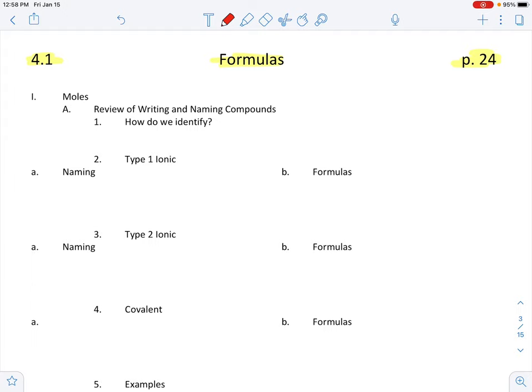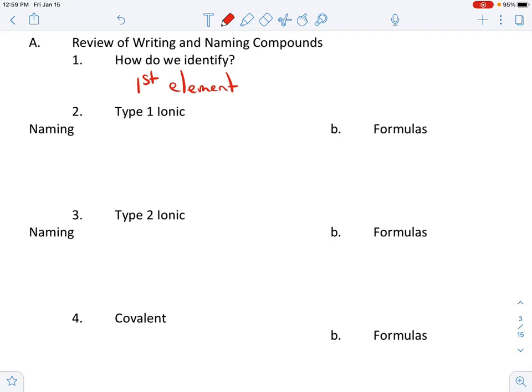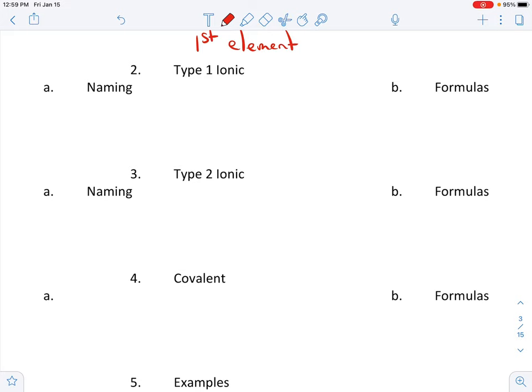Since that's our first step, the biggest key is all that coloring we did on our periodic table is now useful for us. Our first element tells us what type of compound we have. So all we have to do is look at the first element and it's going to identify whether it is type one ionic, type two ionic or covalent.